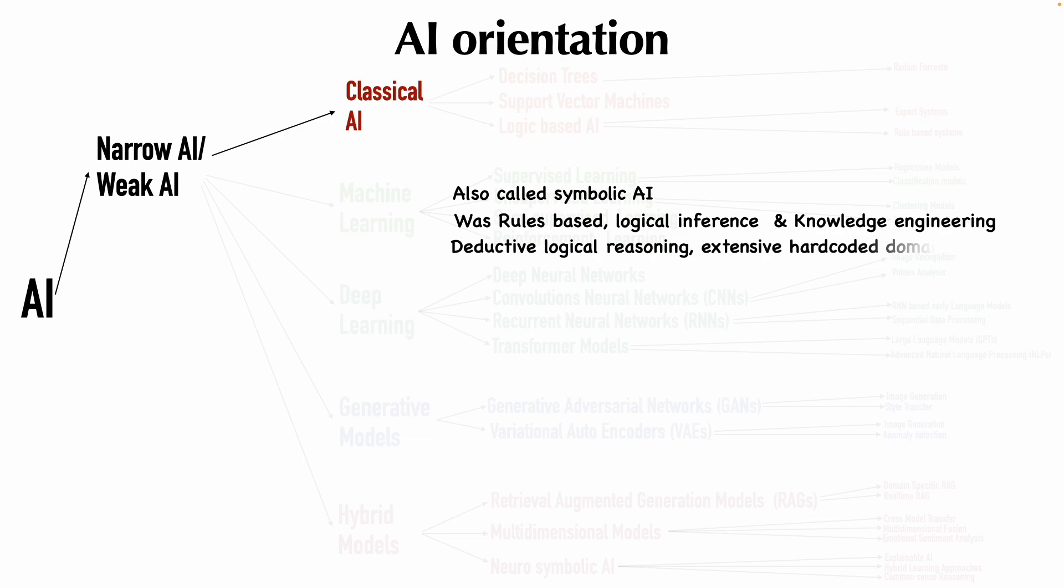So it involved deductive logical reasoning, creating extensive hard-coded domain knowledge. To put it in a nutshell, you still wrote code in classical AI. Of course, the complexity of the code was very, very advanced. But there was no concept of learning as such. People with very deep understanding of the domain wrote very complicated logic to make it look like they were artificial intelligence.